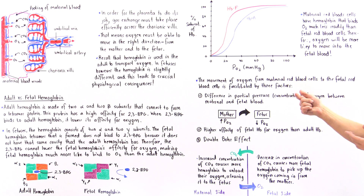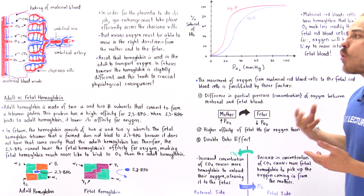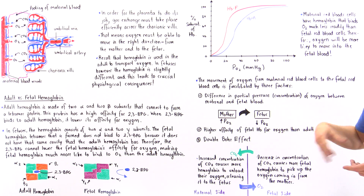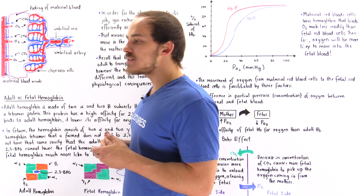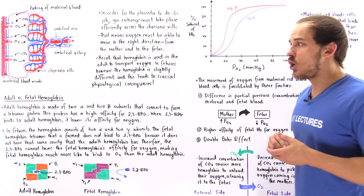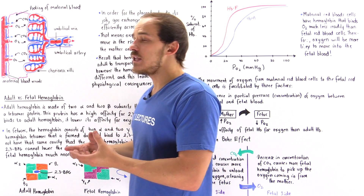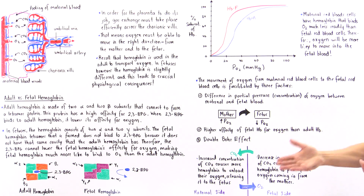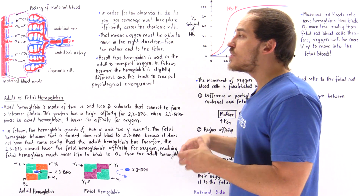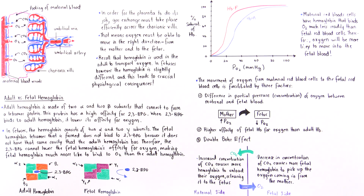The third factor facilitating oxygen diffusion across the placenta is the double Bohr effect. The Bohr effect is the ability of carbon dioxide to affect hemoglobin's affinity for oxygen: the more carbon dioxide in the blood, the less likely hemoglobin will bind oxygen; conversely, the less CO2 in the blood, the more readily hemoglobin will bind oxygen.